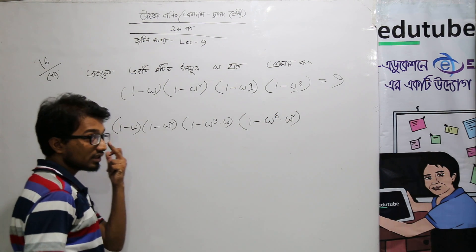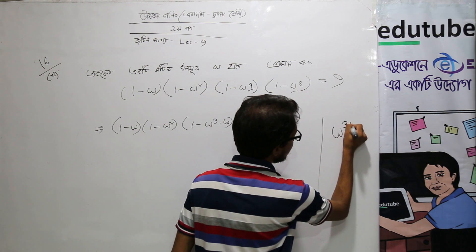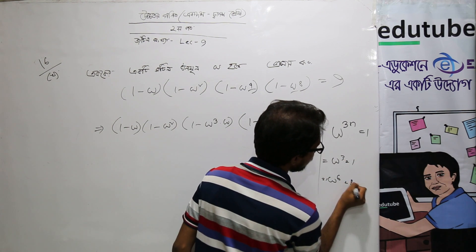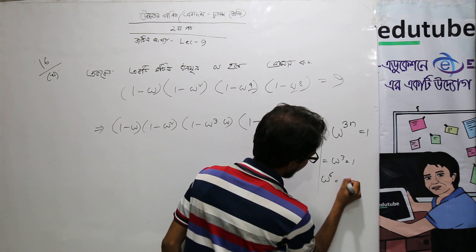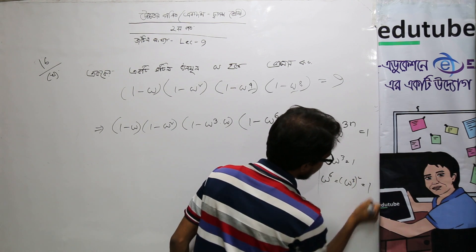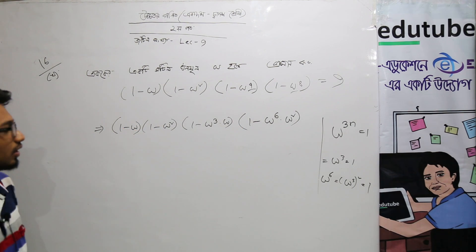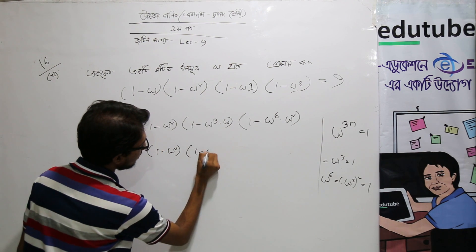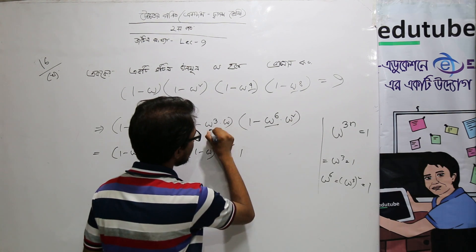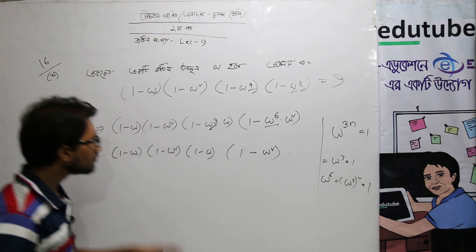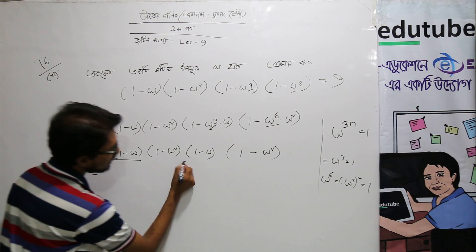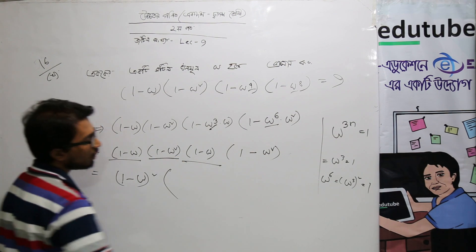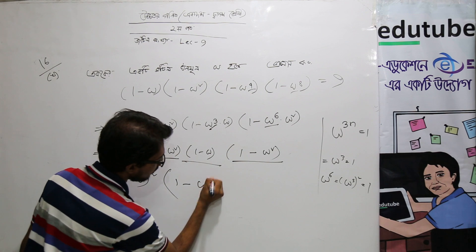Omega to the power 4 equals omega to the power 3 into omega, which equals omega. We have 1 minus omega and 1 minus omega squared. To do this, we are going to compute 1 minus omega squared, whole squared.